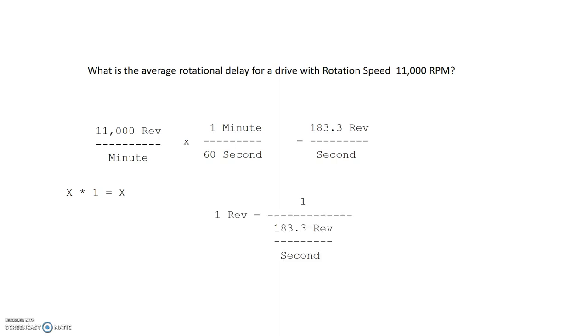Now, one revolution would be one over 183.3, which is 0.00545 seconds. That's for one revolution. So if the rotational delay is the average delay, which means it's a half a rotation, then if we divide that by two, now we're going to get this, in this case here, the 0.00272 seconds is the average rotational delay.